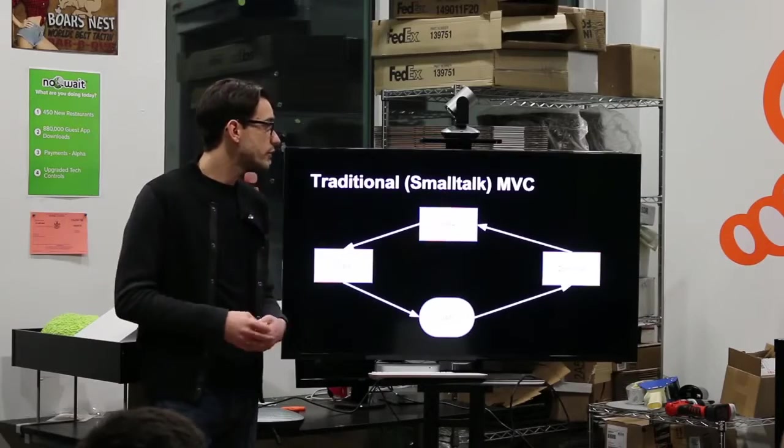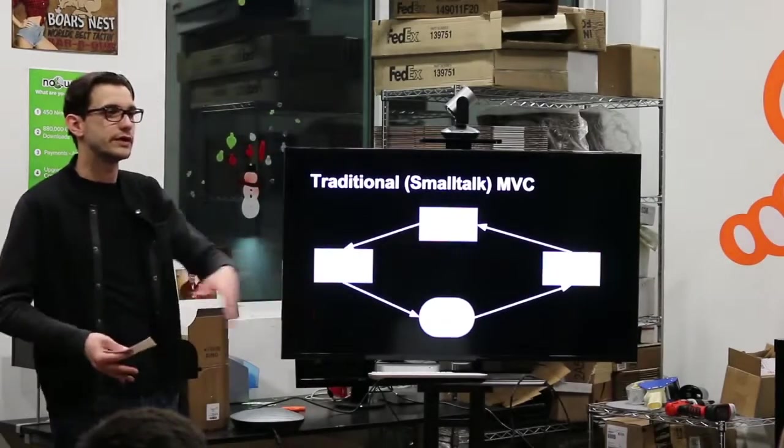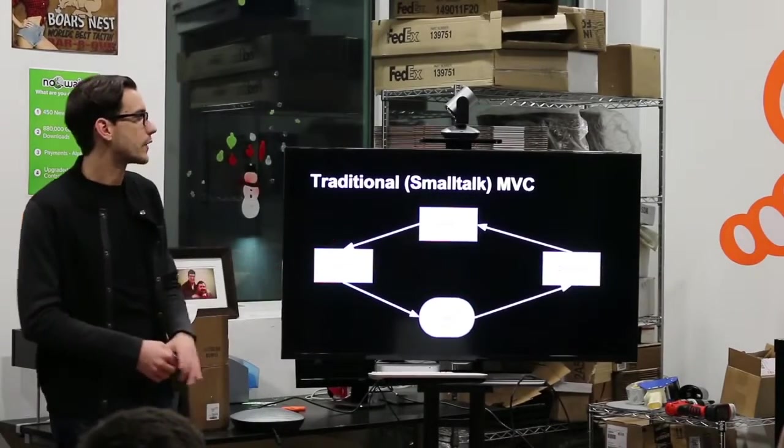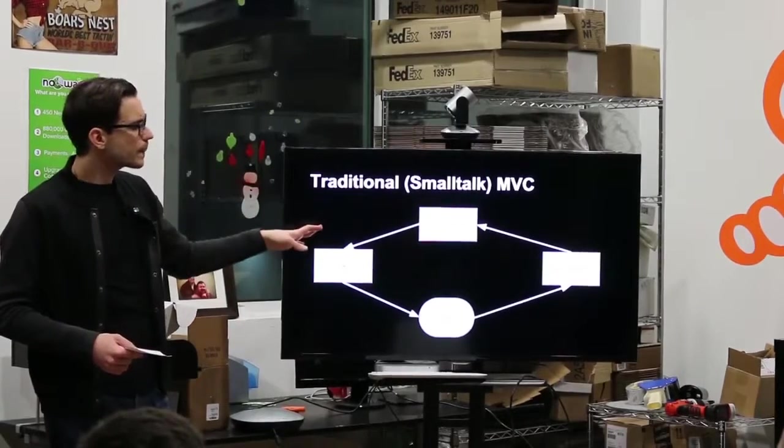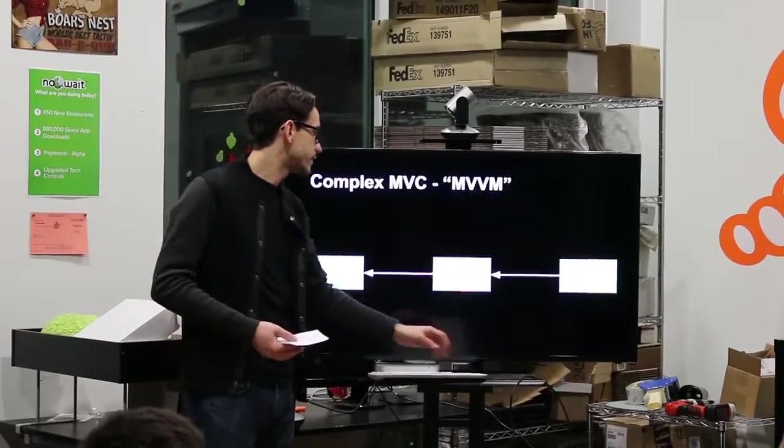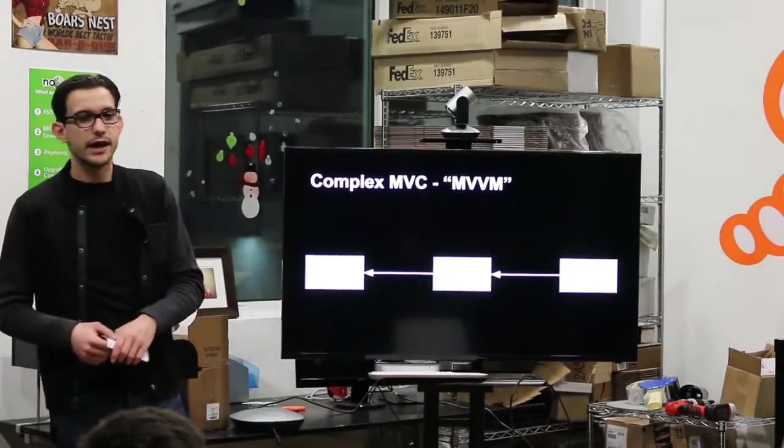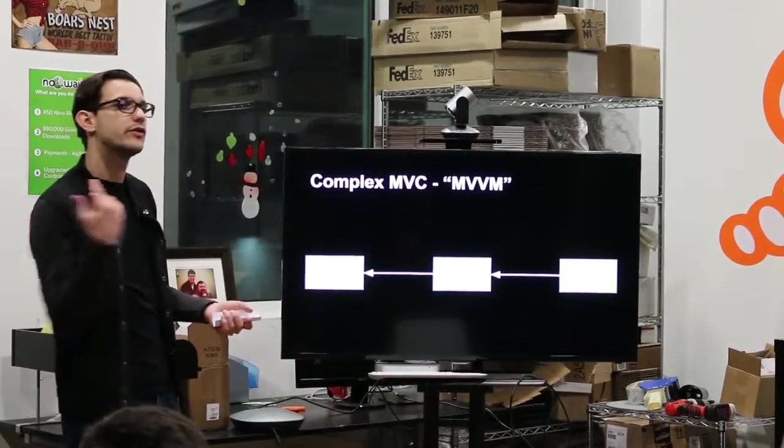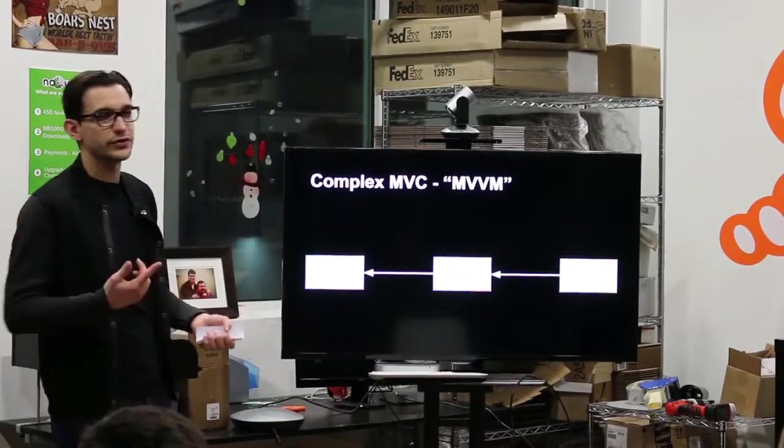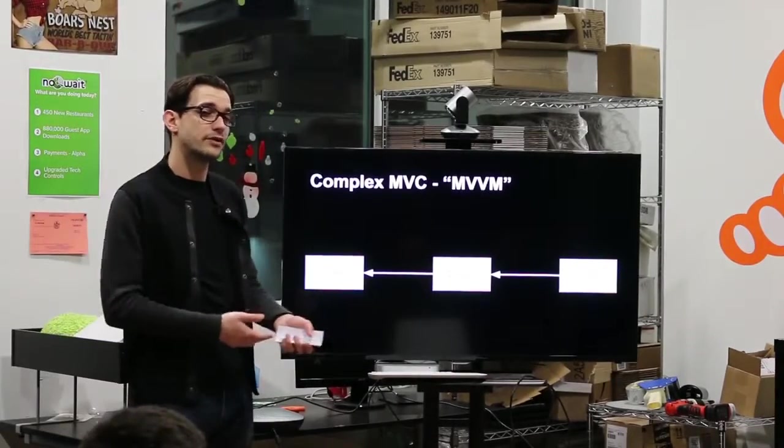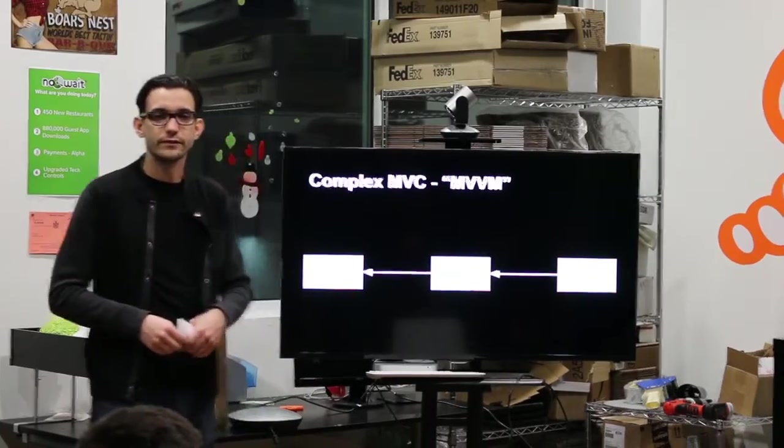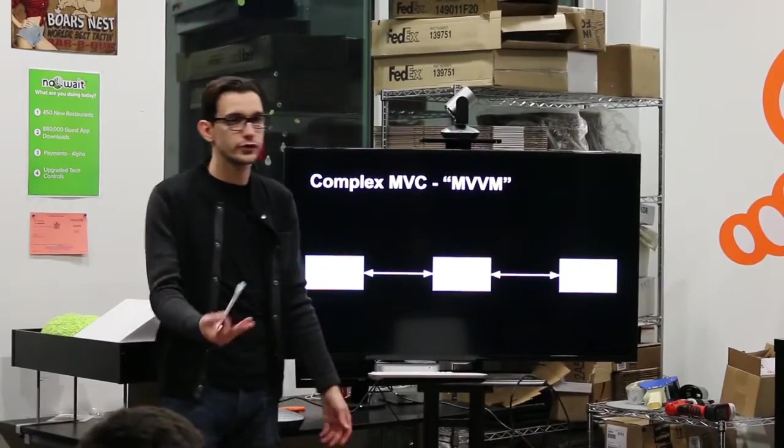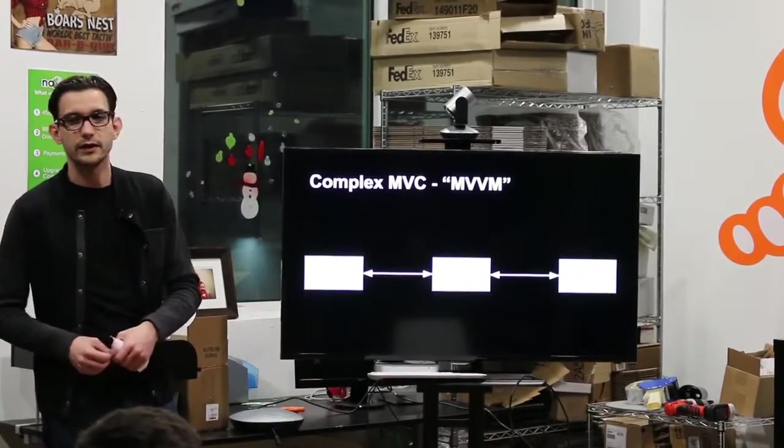You have your model which populates your view, and then you have a user that creates a user interaction, and then that tells the controller to do something on the model. The problem is that's not what we do today. In contemporary MVC, we put it all wide in one flat line. So what you usually do is you add that extra arrowhead on that line.